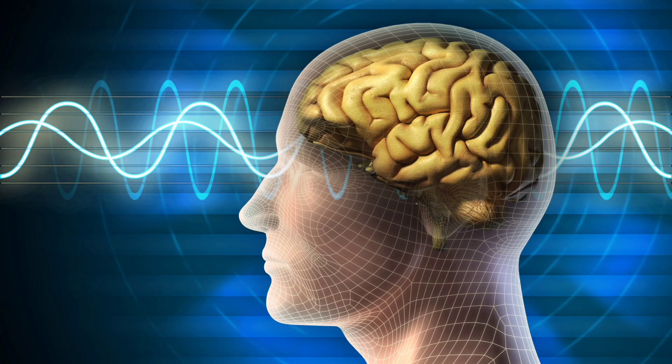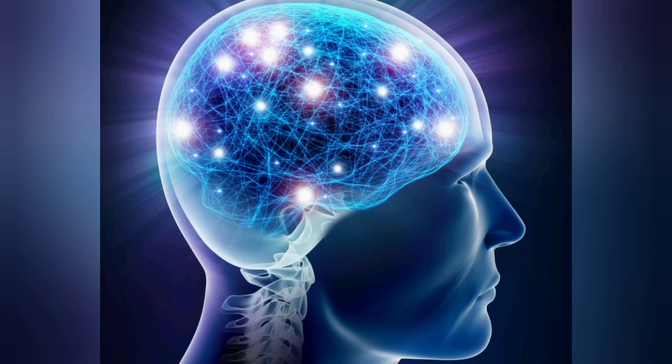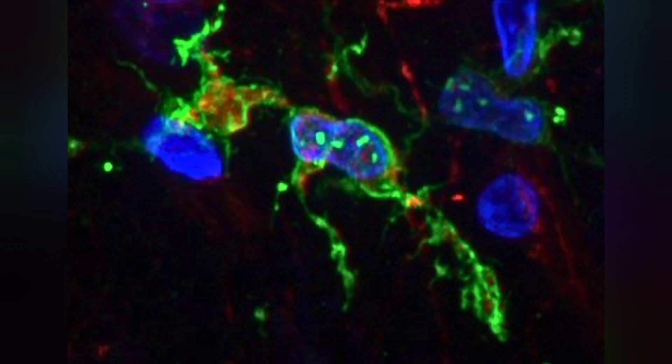The microglia types in the brains of people with Alzheimer's disease were less likely to be protective, compromising their ability to pull their weight in cleaning up dead cells and waste and promoting healthy brain aging.